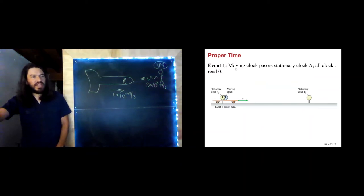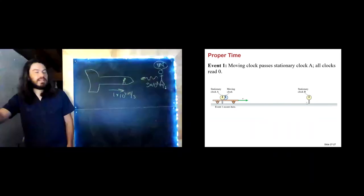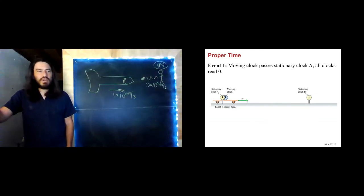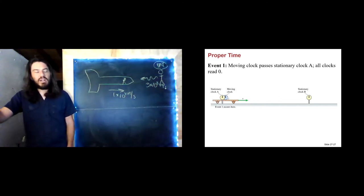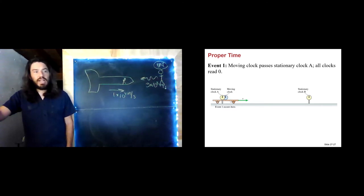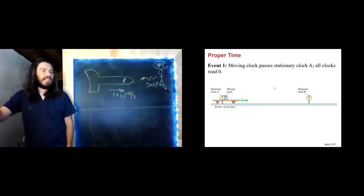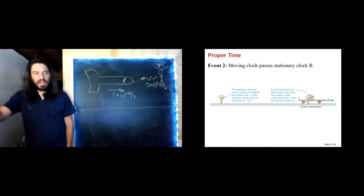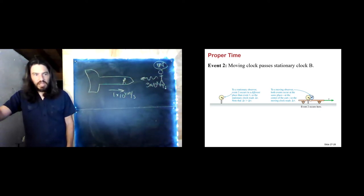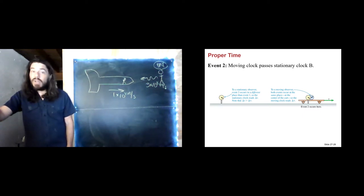We have two events. The first event is a moving clock passing stationary clock A, and the second is the moving clock passing stationary clock B. Since A and B are in the same reference frame, they are synchronized and should run at the same rate. Right when event one happens — the train car passing clock A — all clocks are synchronized to zero. However, at event two, the moving clock passes stationary clock B, and we see two different time intervals. The moving clock measured a smaller time interval — it must have measured the proper time.